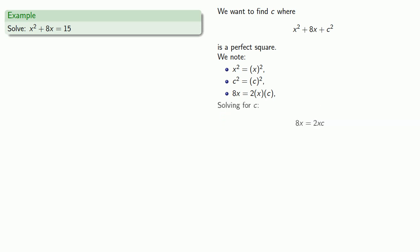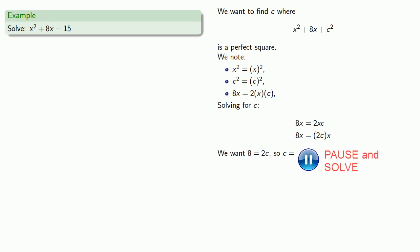Solving for c, we can rearrange these products any way we want. So 8x is 2c times x, meaning 8 equals 2c. So c is equal to 4, and c squared is 4 squared, otherwise known as 16.